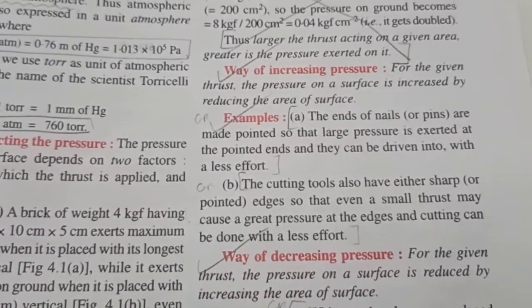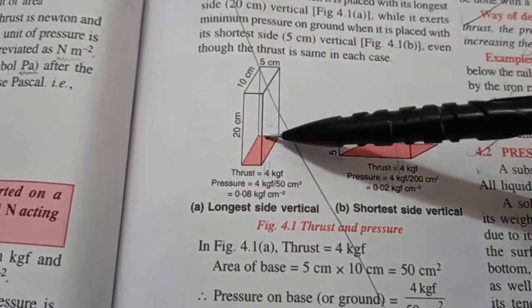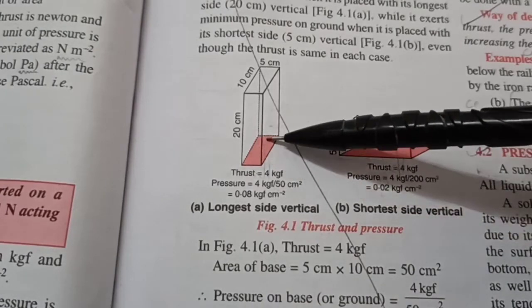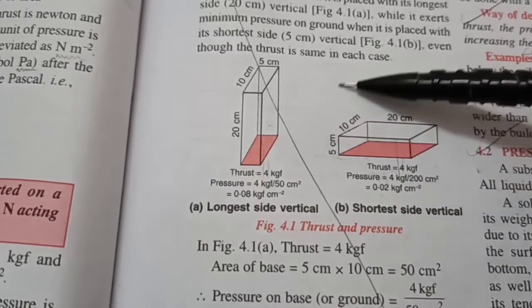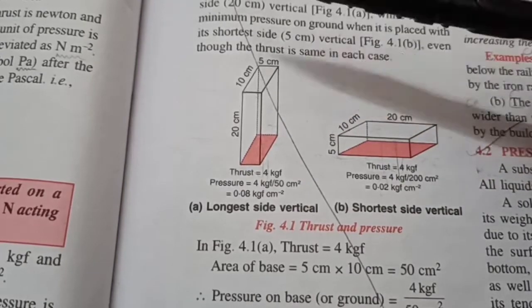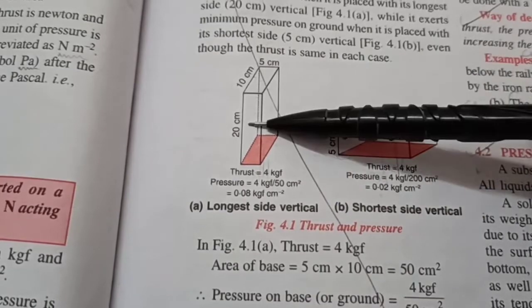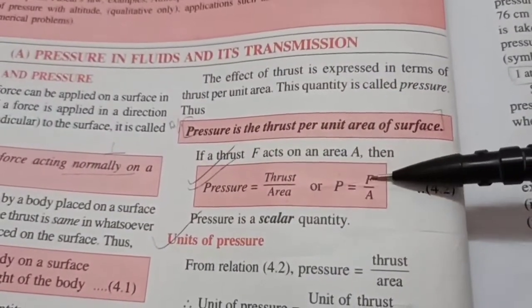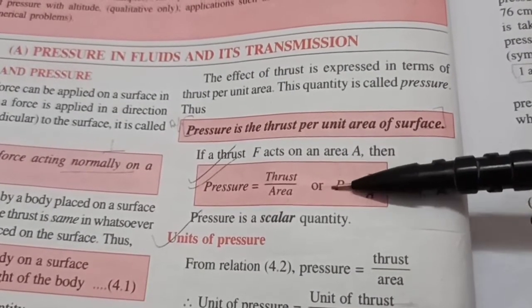Now, what are the ways of increasing pressure? As you can see from the diagram, one way is to decrease the surface area of contact. The smaller the surface area, the more the pressure. And the second way is obviously to increase the weight. If I put another brick on top of it, obviously the pressure will increase and it will sink further. So, more the force or more the weight or the thrust, greater is the pressure. So, the two ways are either you increase the thrust or you decrease the area. In this way, you can increase the pressure.